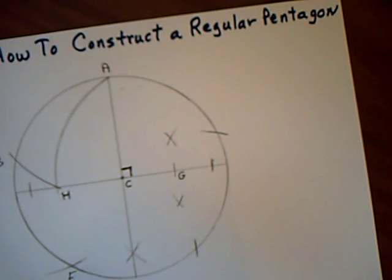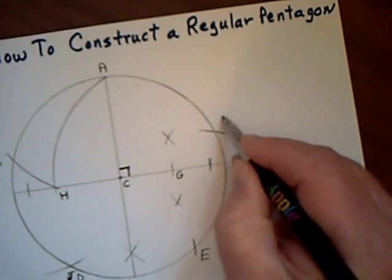So this is E, F, sorry, this is D, this is E, and this is F.